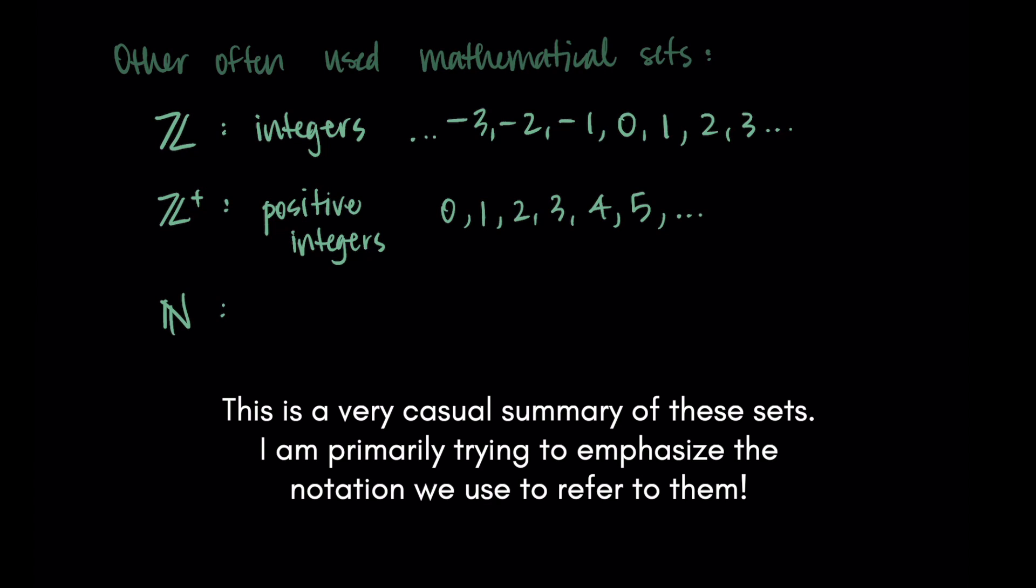Then we have the natural numbers. These are the same except without zero. So one, two, three, four, five, and six. These are sort of our whole numbers.